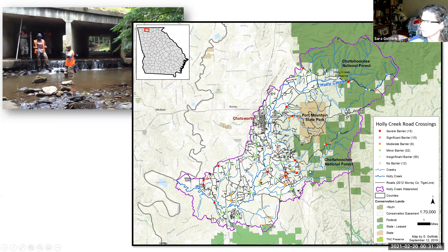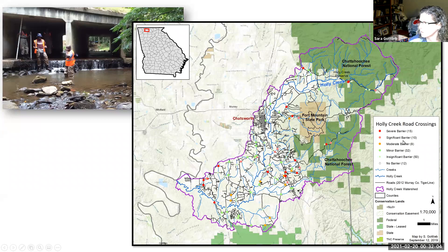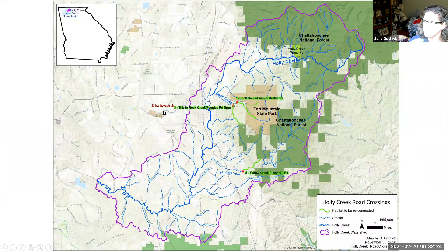The result of that assessment shows all visited sites color-coded by priority in the map legend. Out of around 200 sites visited, 25 were determined to be severe or significant barriers. Additional information was layered in to decide which crossings to focus on addressing — including how much upstream habitat could be opened if the crossing were replaced, and whether there was known presence of rare aquatic species in the vicinity of any of those sites.